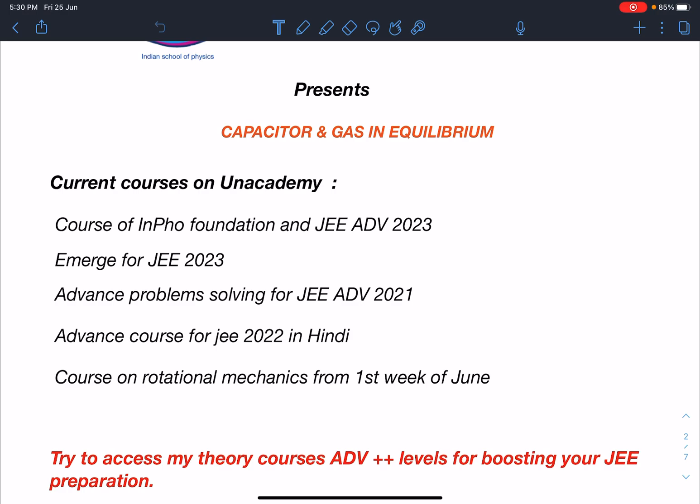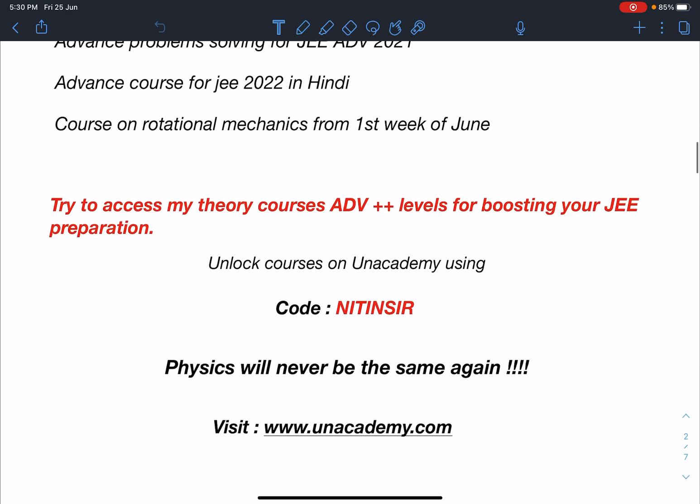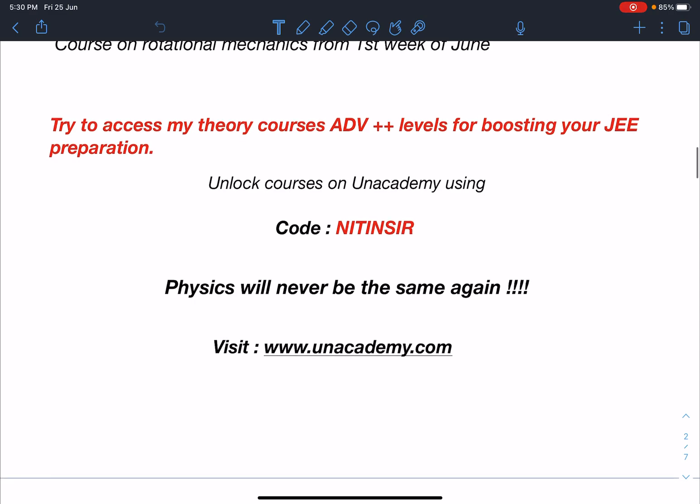It is Arambh batch and we have just about to finish current electricity and magnetism will be the next topic which will be starting in this batch and another course on Rotational Mechanics is already going on. So this batch started on first week of June. You can access my theory courses of last year which are of advanced plus plus levels for boosting your JEE preparation. You can unlock these courses on Unacademy using my code NITINSAR and for more info you can visit www.unacademy.com.